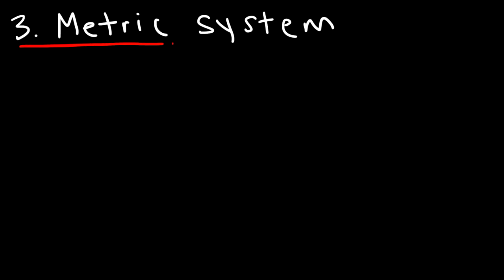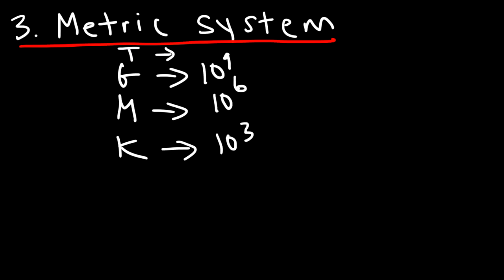The third thing that you need to be familiar with is the metric system. And this is going to help you regardless if you're taking chemistry or physics. Now in the metric system, you need to be familiar with things such as Kilo. If you see the word Kilo, it represents 10 to the third. Mega represents 10 to the sixth. Giga is 10 to the ninth. Terra is 10 to the 12.